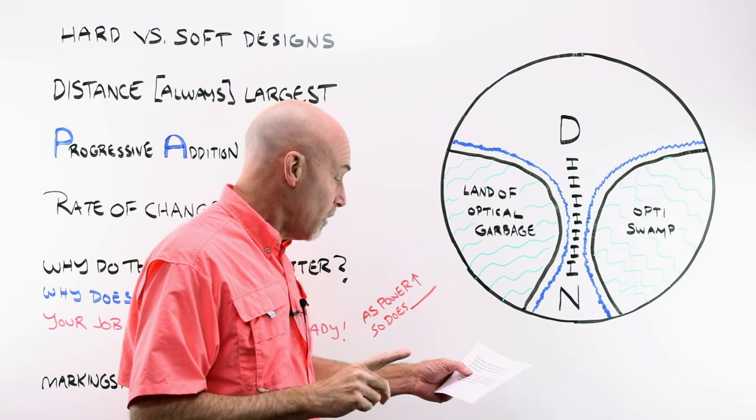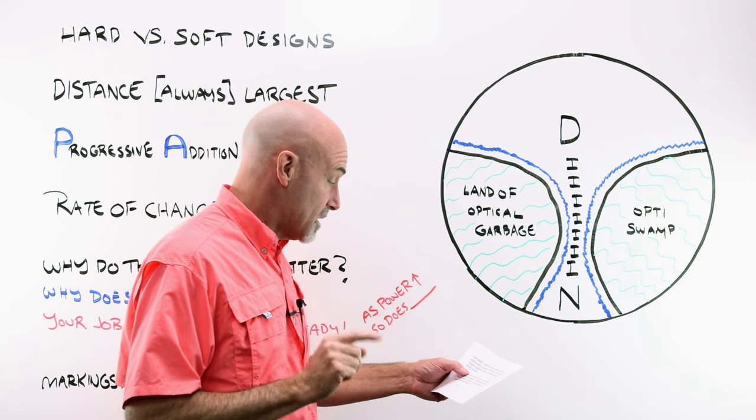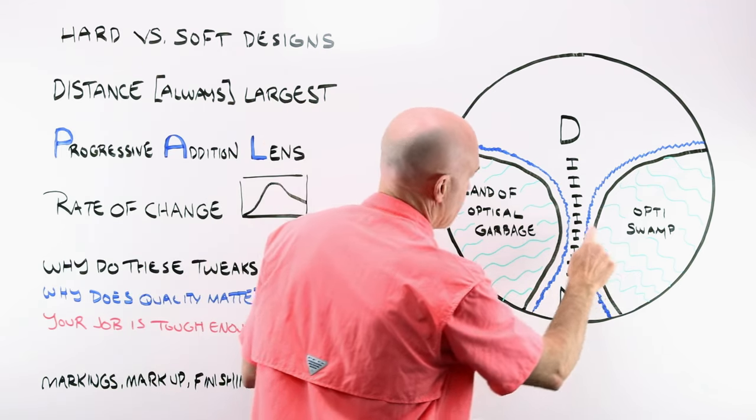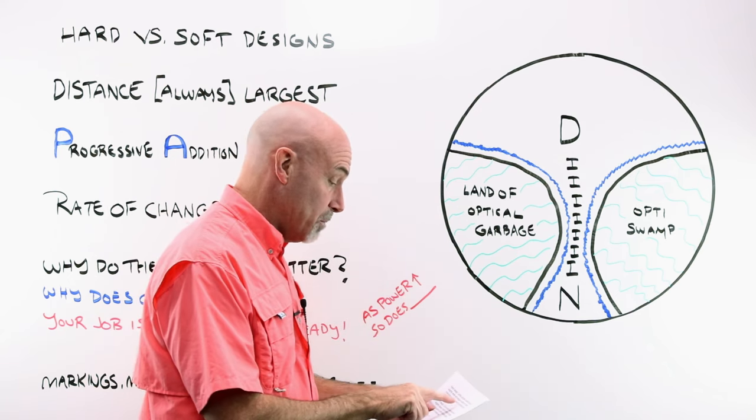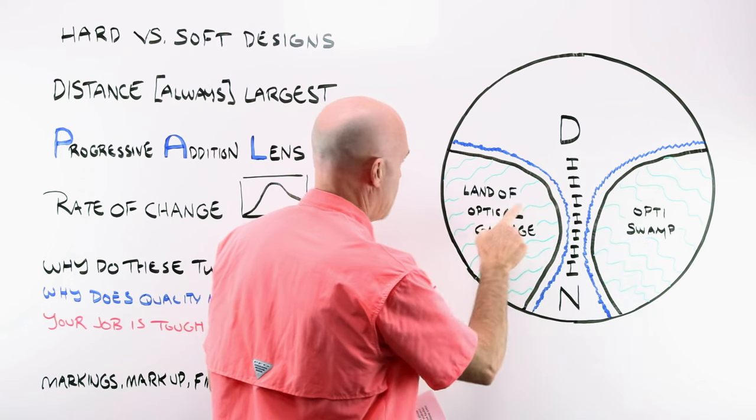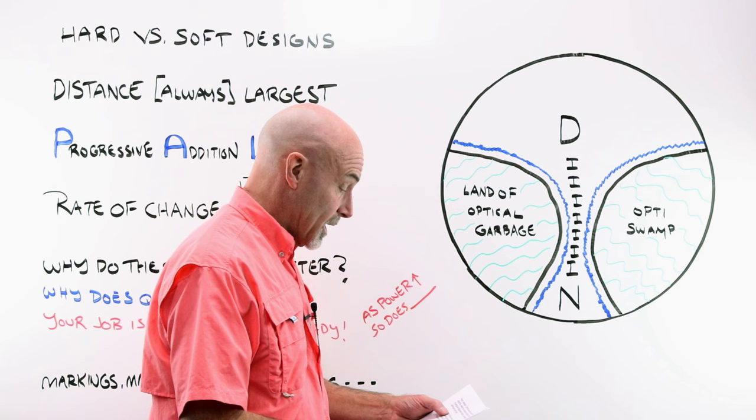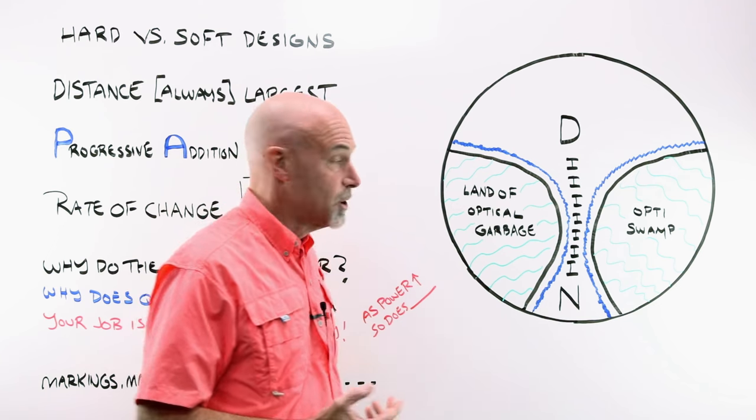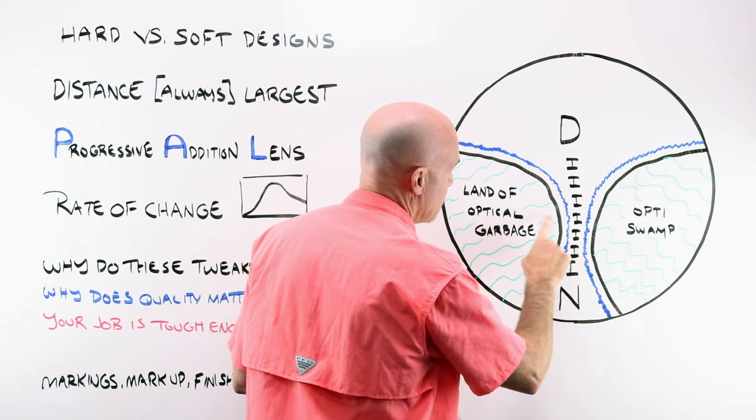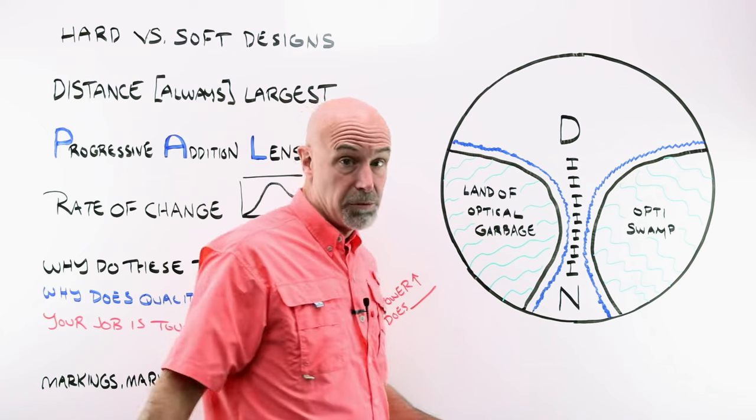A hard design. The corridor and the areas of the usable lens can be slightly wider and enlarged. Okay, so your black lines here. That would be a hard design. But the transition from clear to the marginal astigmatism, the optical swamp and the land of optical garbage, the distortion in the peripheral area is abrupt and harsh. Once your eye wanders from this clear zone into these areas, it's a very clear place. It's like a slap in the face. It was very disorienting for people to wear.